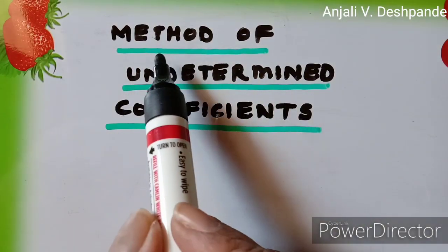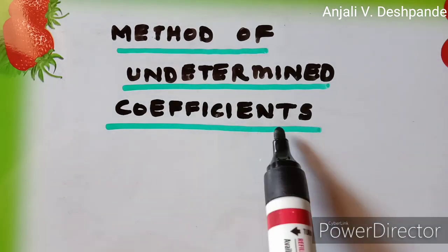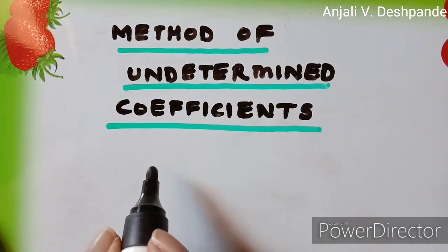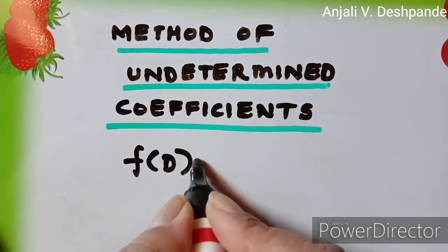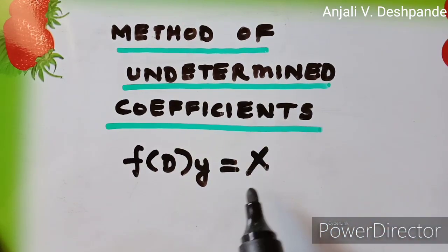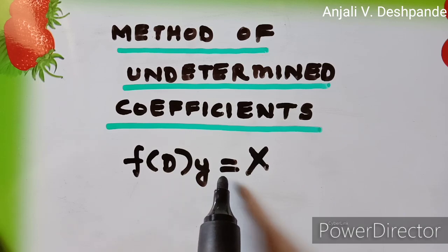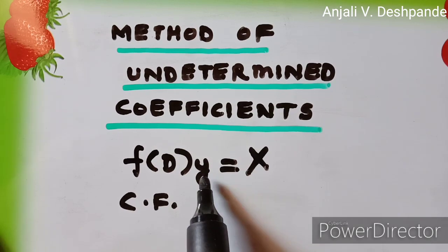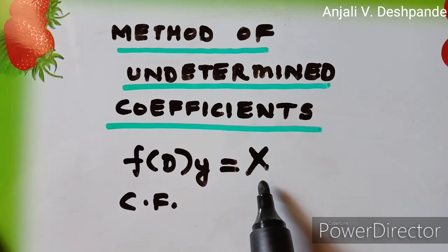In this video, we are going to see the method of undetermined coefficients to solve the non-homogeneous linear differential equations. Supposing the linear differential equation is given to us in this form, as usual, we have to find the CF and then the PI has to be found by a different method, which is the method of undetermined coefficients.